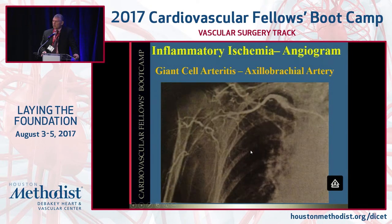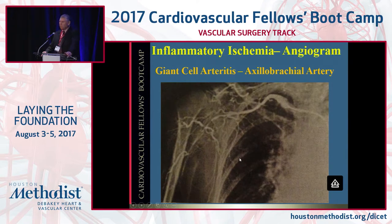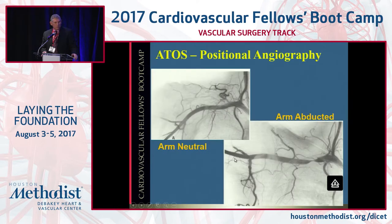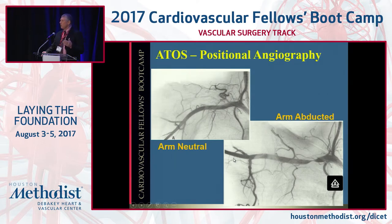How about giant cell arteritis? As somebody who comes into your office with a history of that and some ischemia — this is different than Takayasu's. Giant cell arteritis affects the axillary and brachial vessels, while Takayasu's affects the innominate and subclavian and tends to be more proximal. Knowing that difference will be helpful in your diagnosis. These are not easy people to diagnose. You're going to have to go through your checklist, do your reading, and have a good knowledge base.